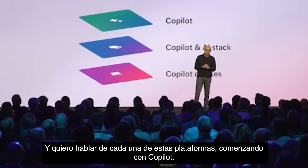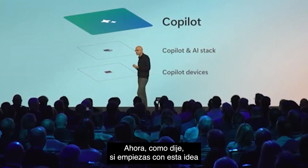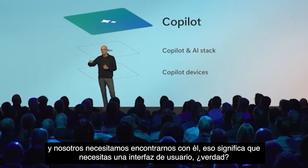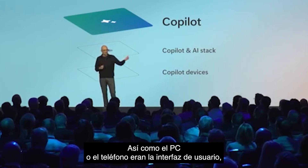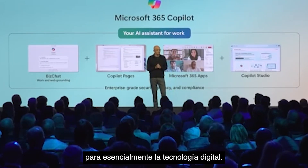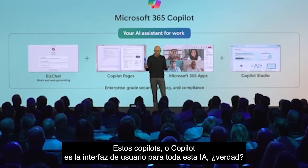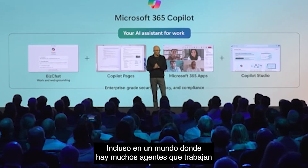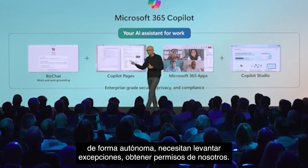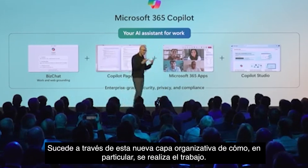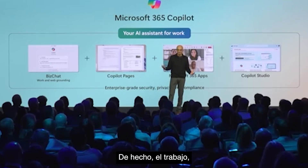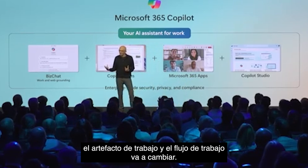Starting with Copilot: this rich agentic world ultimately needs to meet us, and we need to meet it, which means you need a UI interface. Just like the PC or the phone was the user interface to digital technology, Copilot is the UI for all of this AI. Even in a world where many agents are working autonomously, they do need to raise exceptions and get permissions from us. That happens through this new organizing layer for how work gets done. Work, work artifacts, and workflows are going to change.